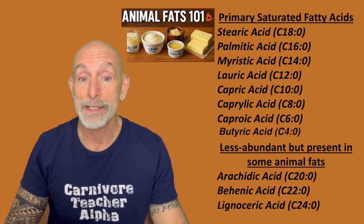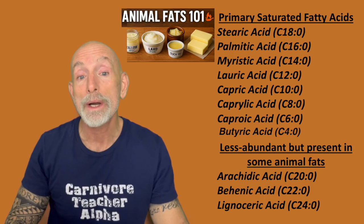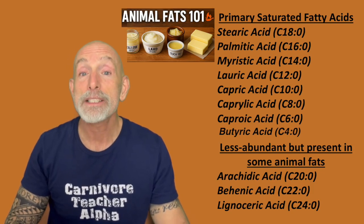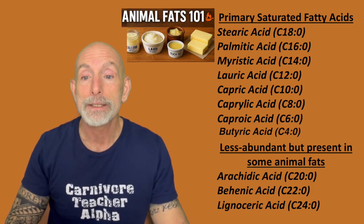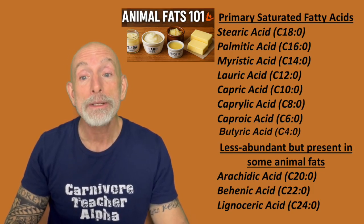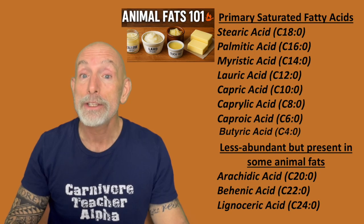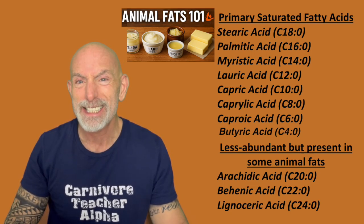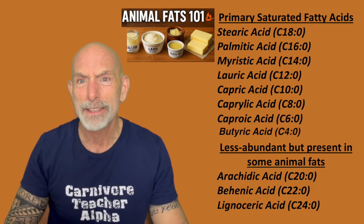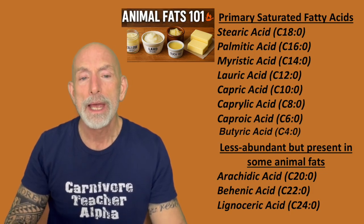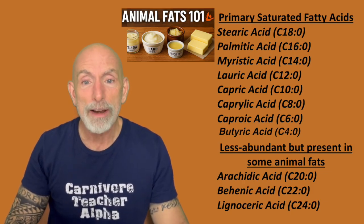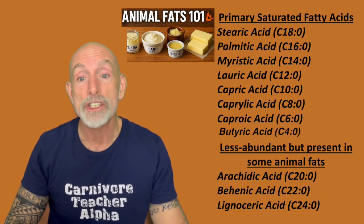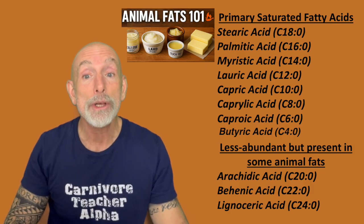Then there's caproic acid, a short-to-medium chain fat found in milk fat. It gives you rapid energy and is a ketone precursor. Caprylic acid is a medium-chain fat — that's the C8 you see on MCT oils. It's found in dairy fat, goat, and sheep fat. It converts quickly to ketones and is antimicrobial.